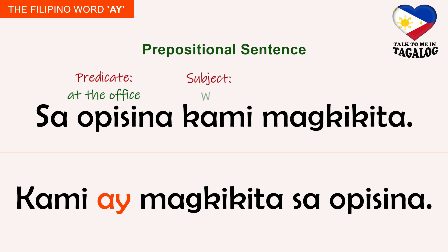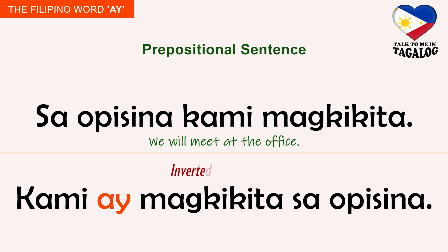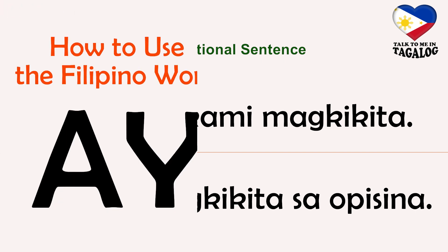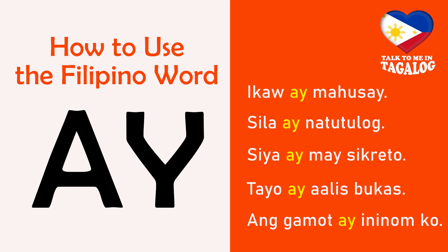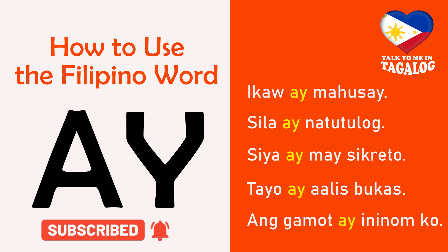'Sa opisina kami magkikita' means we will meet at the office. Inverted order: 'Kami ay magkikita sa opisina'. That's all for this lesson. I hope that you learned something. Again, let me remind you not to use the inverted word order in conversations, because you will sound weird and funny if you talk to your Pinoy friends in that fashion. Thanks a lot for watching. Please don't forget to like, share, and subscribe to Talk to Me in Tagalog for more Filipino grammar lessons. Maraming salamat po!